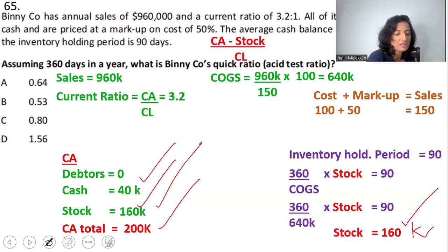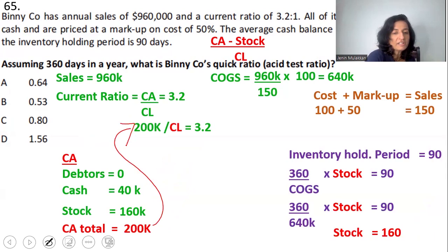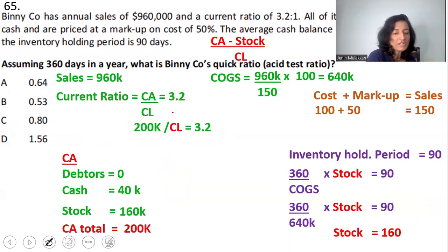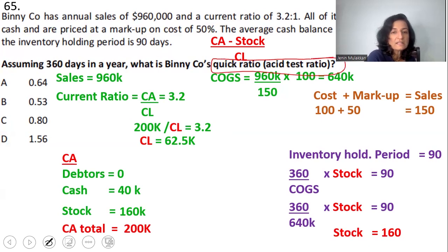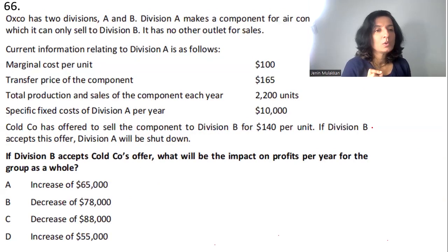With current assets of $200,000 and current ratio of 3.2, we solve: $200,000 ÷ current liabilities = 3.2, giving current liabilities = $62,500. Now substituting into the quick ratio formula: (current assets − stock) ÷ current liabilities = ($200,000 − $160,000) ÷ $62,500 = $40,000 ÷ $62,500. The quick ratio is 0.64.